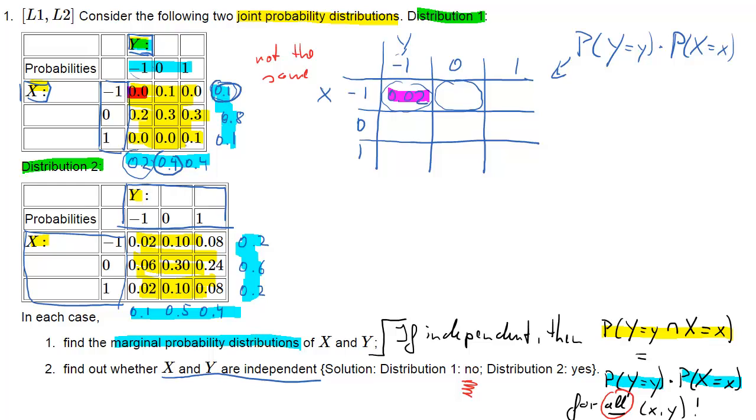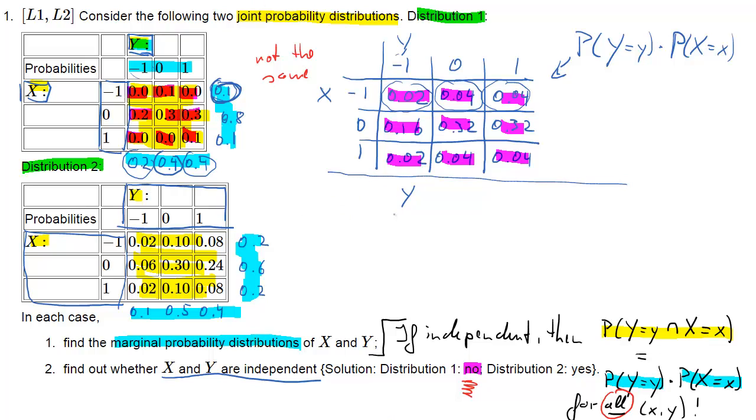But let's continue and complete the table. 0.1 times 0.4 is the product of the marginal distributions for X = -1 and Y = 0, and for X = -1 and Y = 1 we get 0.04, and so forth. We can complete this table—make sure you understand where all these values come from. They're always the product of the respective marginal probabilities. Now you can see that all of these are slightly different to the ones you observe, so the answer here is that for distribution 1, X and Y are not independent.